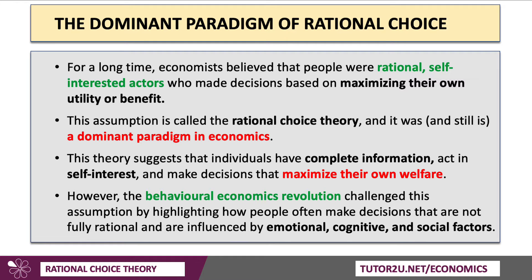This theory suggests individuals have maximum, complete, full information. They act in their own self-interest and make decisions that maximise their own welfare. The behavioural economics revolution has challenged this assumption by saying that people are not fully rational — often they're predictably irrational — and we know they're influenced by emotional, cognitive and social factors.